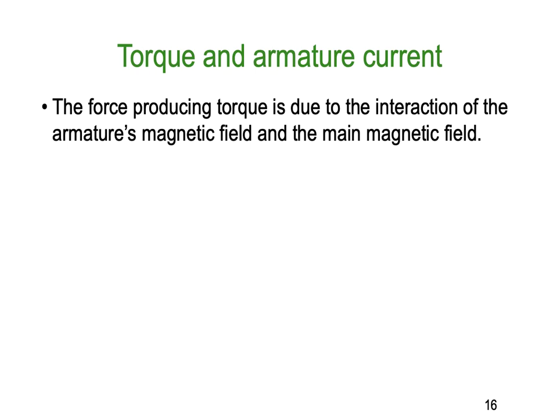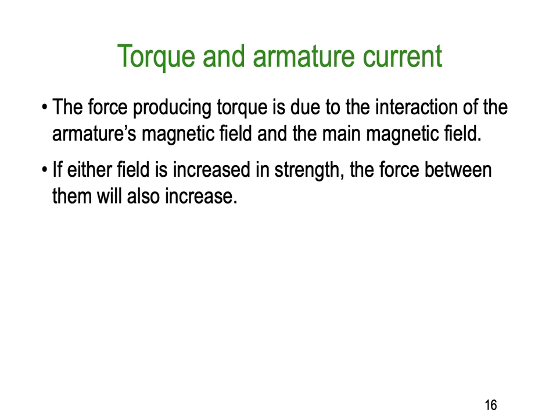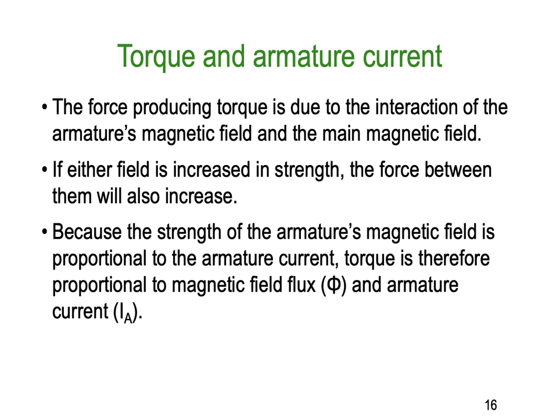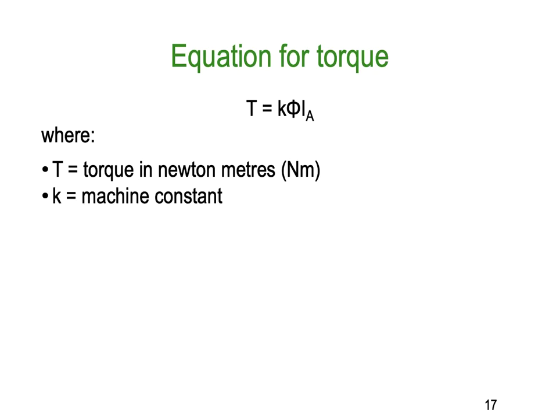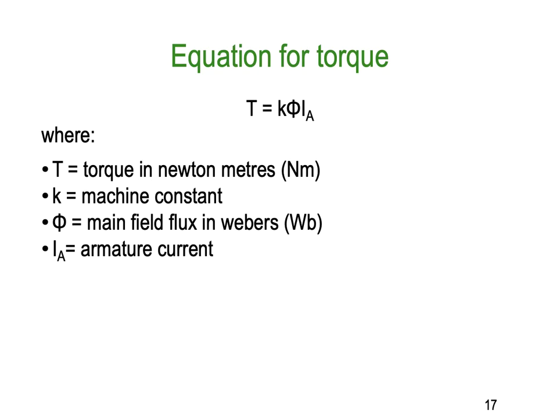Torque and armature current: the force producing torque is due to the interaction of the armature's magnetic field and the main magnetic field. If either field is increased in strength, the force between them increases, meaning the motor can carry heavier loads. Because the armature's magnetic field is proportional to the armature current, torque is proportional to flux Φ and armature current I. This gives the formula T = kΦI, where T is torque in newton metres, k is a machine constant, Φ is main field flux in webers, and I is armature current.